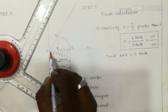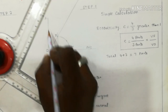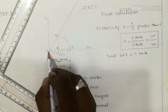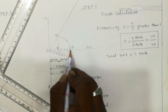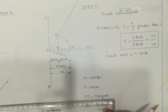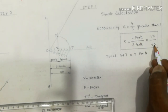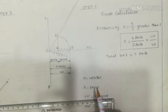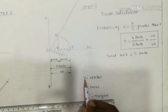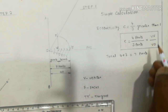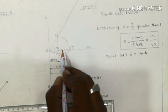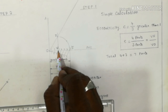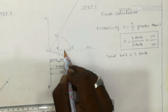The distance of focus F from the directrix is 40mm, divided into 7 equal parts. Based on the eccentricity ratio, VF equals 4 parts and VO equals 3 parts. The vertex V is marked at the third point from O — that is, 3 parts from O — so V is located at point 3 on the axis.